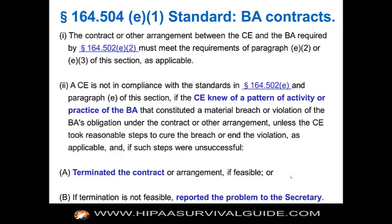Under 164.504(e)(1), the standard BA contracts of the privacy rule: the contract between the covered entity and the BA must meet the requirements of paragraph (e)(2). There are certain statutory and regulatory requirements that must be in the contract; beyond that, it's a contract and the parties are free to do in that contract what they would normally be able to do. A CE is not in compliance if the CE knew of a pattern of activity or practice of the BA that constituted a material breach — a covered entity is not allowed to look the other way, and neither is a business associate.